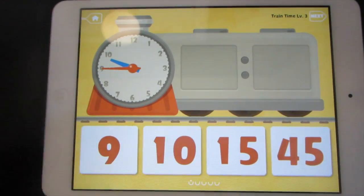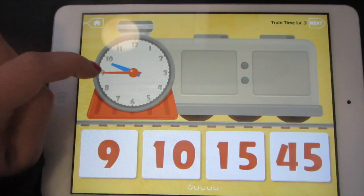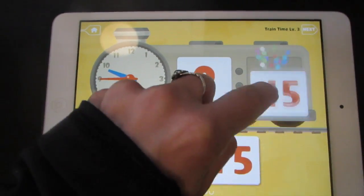Drag the numbers to show the time into the correct slots. I can see that the time is 9:45, so I drag the 9 and the 45.